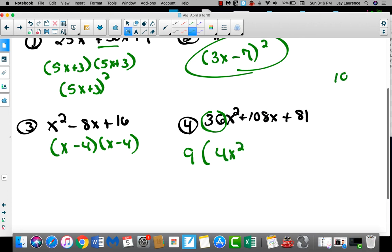Let's see. 108 divided by 9. It's going to go in 12 times plus 12x plus 9. Now I'm going to check and see, is it a perfect square trinomial? Because if it is, I've got to keep factoring. Well, this is a perfect square.